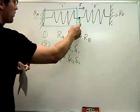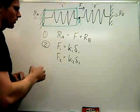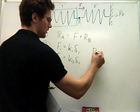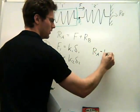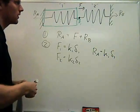Well, what is that? Well F1 has to be balancing RA, so this means that F1 is RA. So I can just rewrite these as RA equals K1 delta 1.